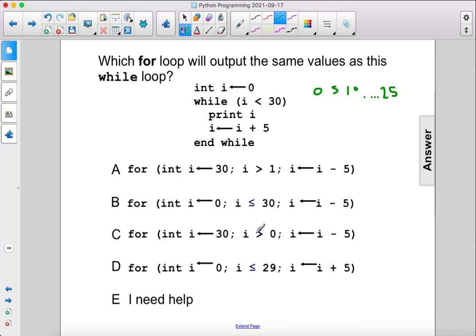Alright, so let's look at these for loops. We don't want to start at 30 and then decrease. We want to start at 0, so it's not going to be A or C.